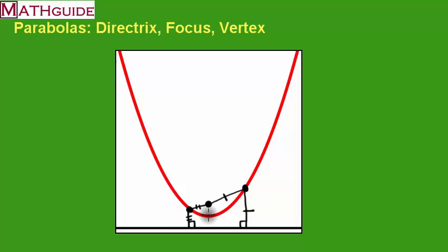Even if we talk about this point here called the vertex, which is the minimum of this curve, this distance here is going to be equal to this distance here. So those two are the same as well.